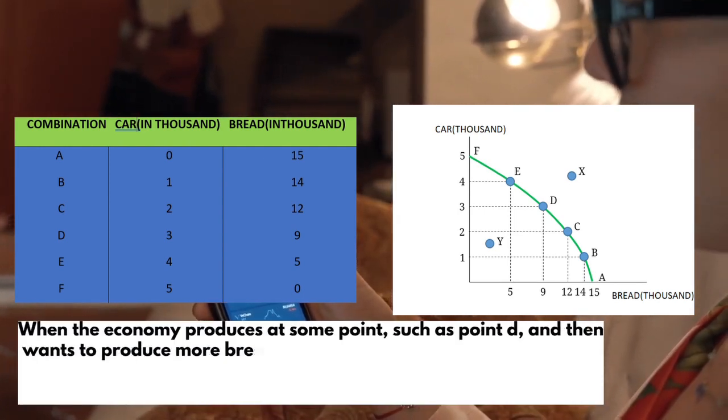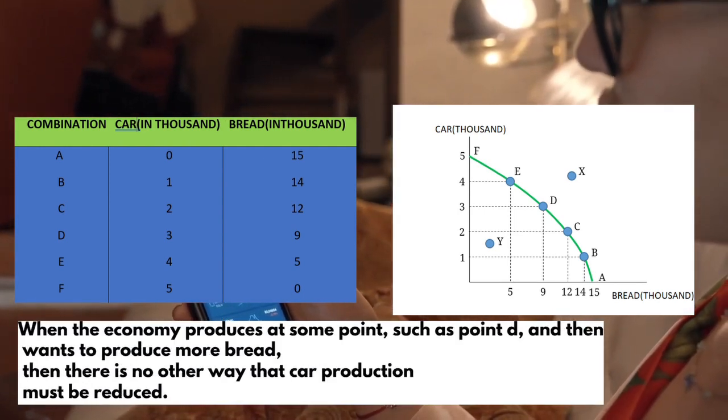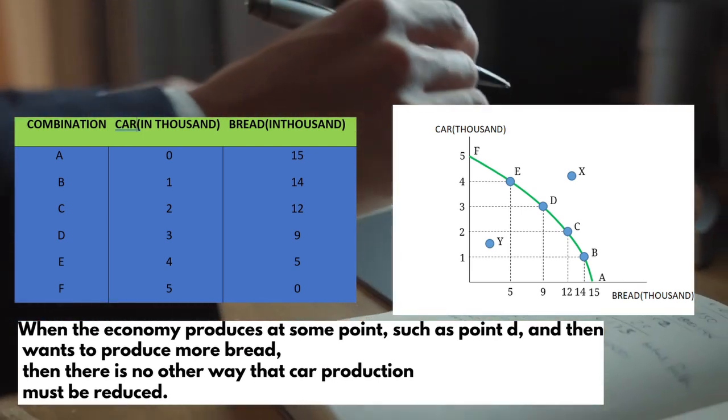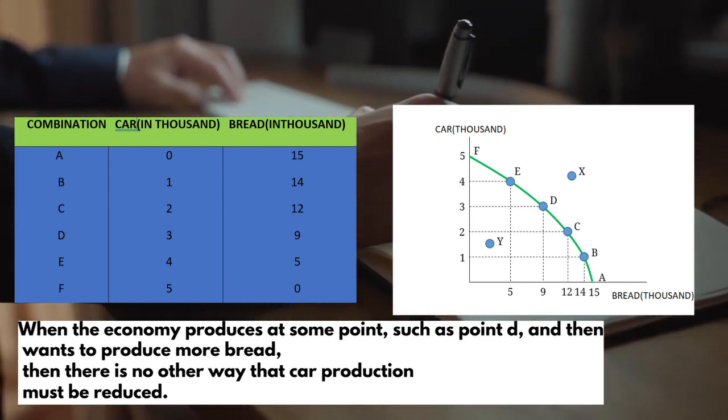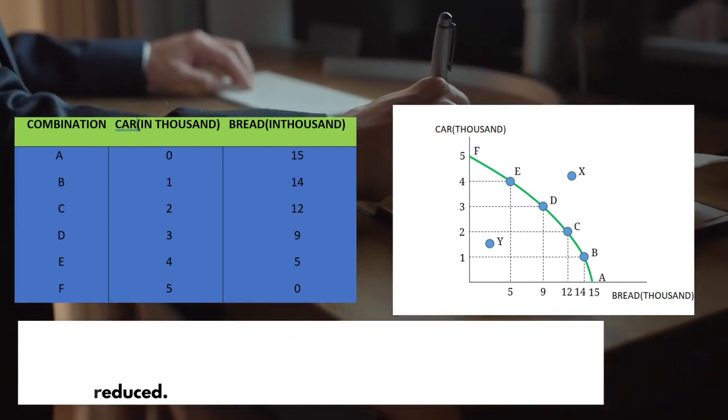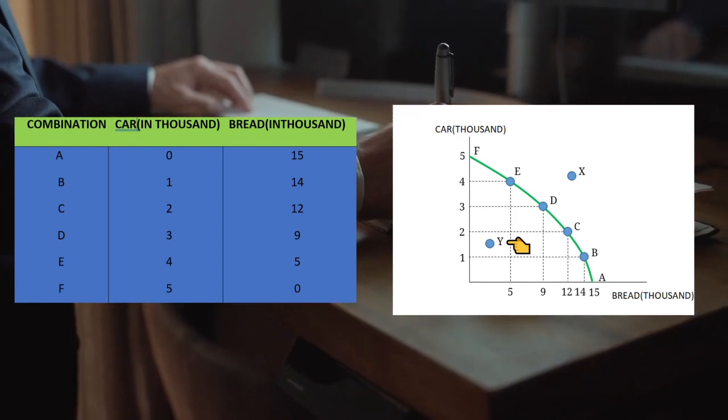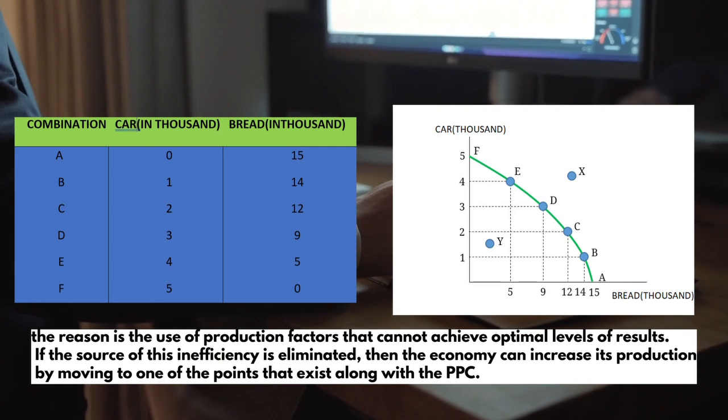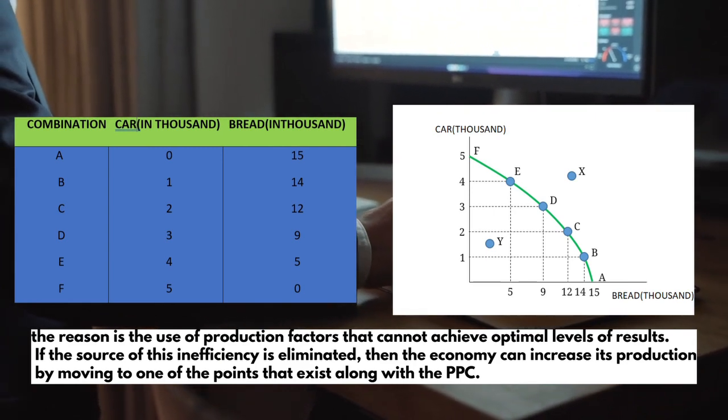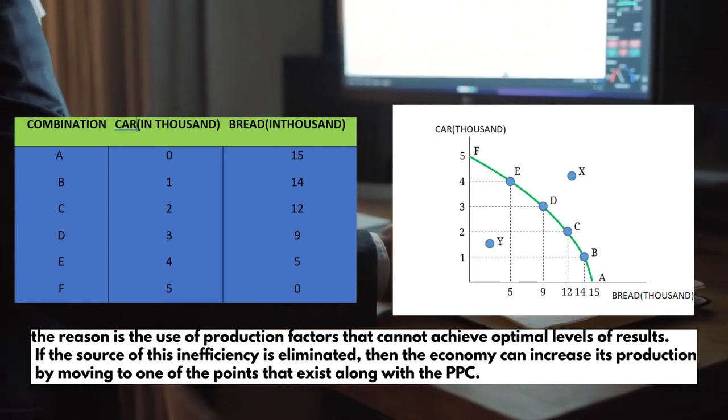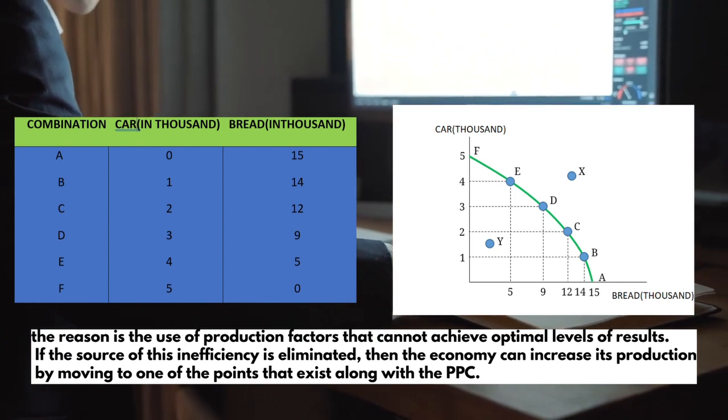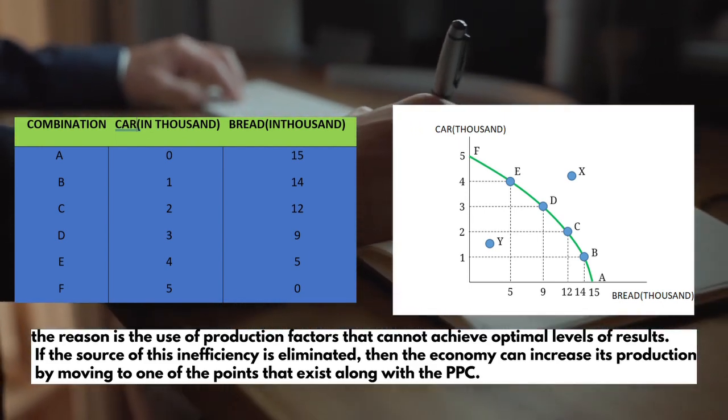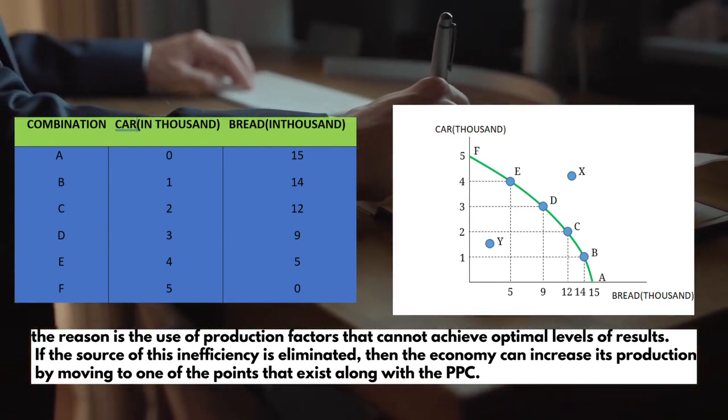When the economy produces at some point, such as point D, and then wants to produce more bread, there is no other way—car production must be reduced. While point Y indicates an inefficient result. The reason is the use of production factors that cannot achieve the optimal level of resources. If the sources of this inefficiency are eliminated, then the economy increases its production by moving to one of the points that lie along the PPC.